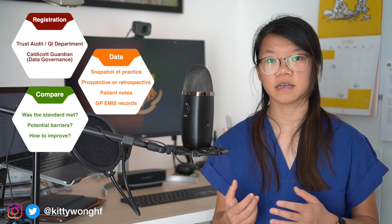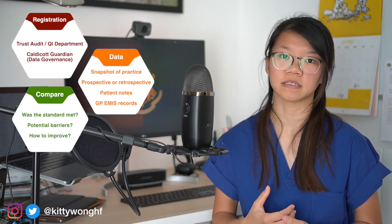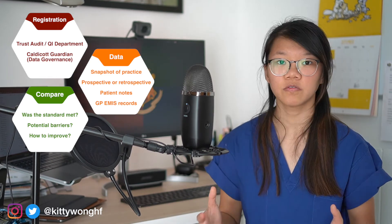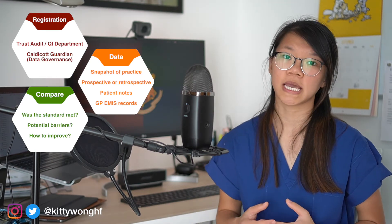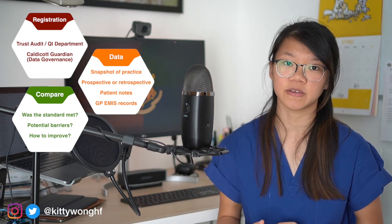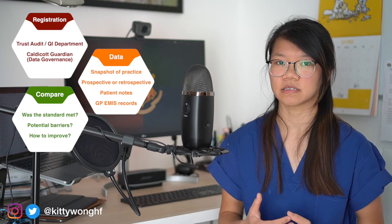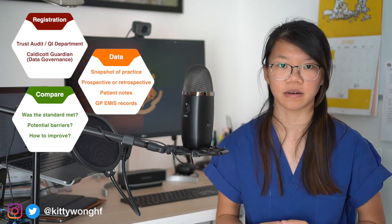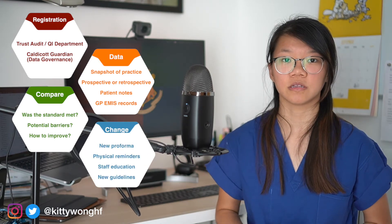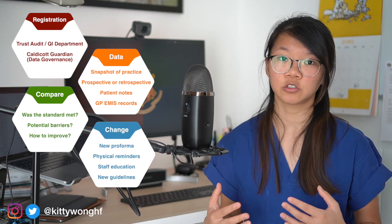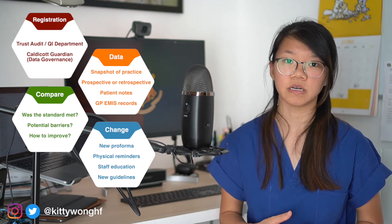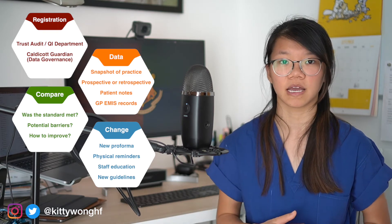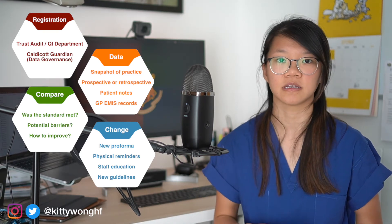After you've gathered the initial dataset, you want to answer whether the standard of practice you were comparing against was actually met. If not, what are the potential barriers stopping this goal from being met? For example, were all patients admitted to hospital accurately assessed for VTE prophylaxis? If not, why? Is it because people are not aware they need to do this, or because they're unsure what the guidelines are? Based on this conclusion, you then implement a potential change to improve practice — in our VTE example, this could mean changing the clerking proforma to automatically list the VTE prophylaxis guidelines and prompt the clerking doctor to fill it out.